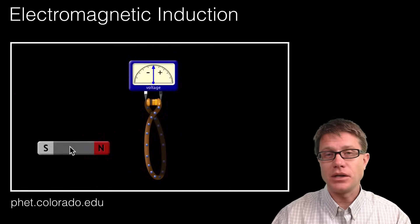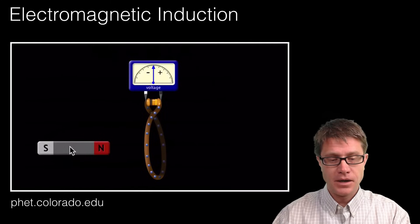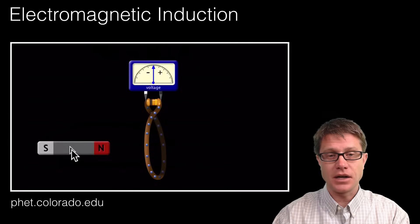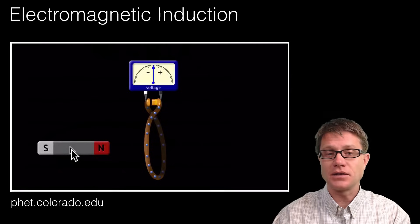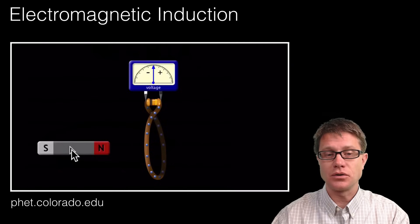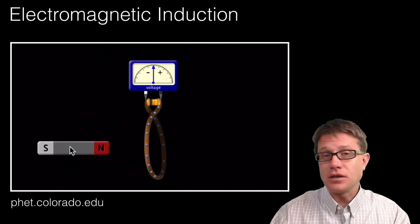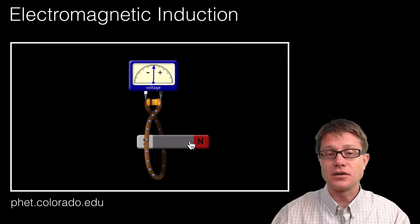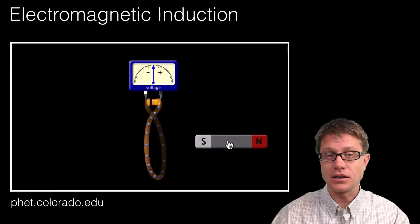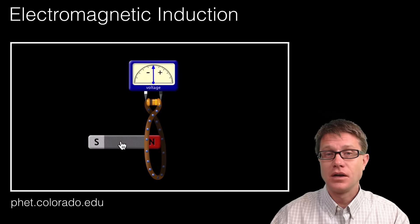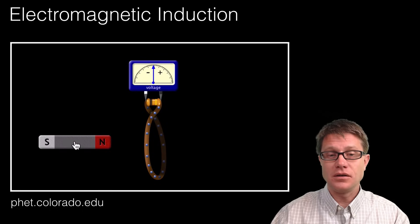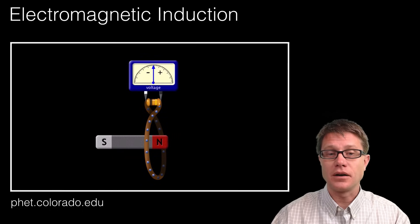This is a PHET simulation that gets at that. We have got a magnet on the left side, and on the right side we have simply got a wire hooked up to a galvanometer — or voltmeter — to measure the amount of voltage. You can see that there is no current right now. But as I start to change the position of the magnet, I am starting to get current. You can even see the electrons moving in the wire.